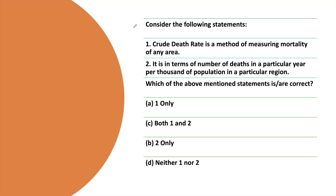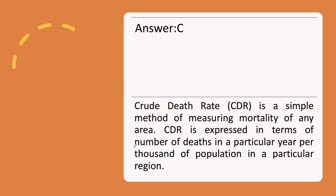The next question: Consider the following statements. Statement 1: Crude death rate is a method of measuring mortality of an area. Statement 2: It is expressed in terms of number of deaths in a particular year per thousand of population in a particular region. Which of these statements is correct? Pause the video, attempt the question, and check the answer. The correct answer is option C, with the explanation.